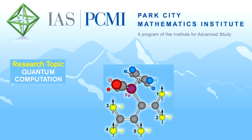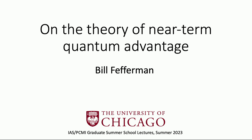Bill Pfefferman did his PhD at Caltech, then his postdoc at UMD and Berkeley, and now he's a professor at the University of Chicago. He has lots of contributions in quantum complexity theory, especially focused on trying to formalize the notion of quantum advantage and trying to prove formal statements about it.